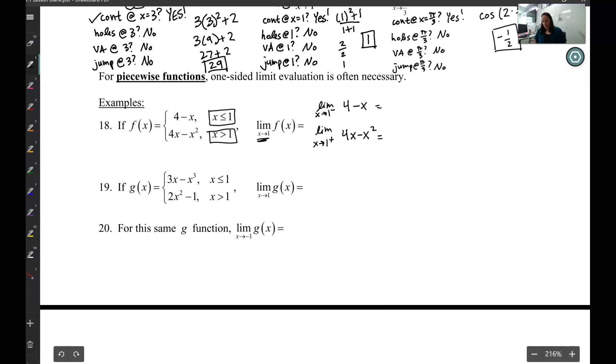Now, I'm going to use direct substitution in these to see if it is continuous. So I'm going to plug 1 into the first one. 4 minus 1 gives me 3, and plug 1 into this one: 4 times 1 minus 1 squared. 4 times 1 is 4 minus 1 squared is 1. That's also 3.